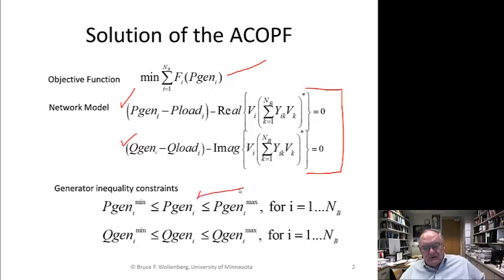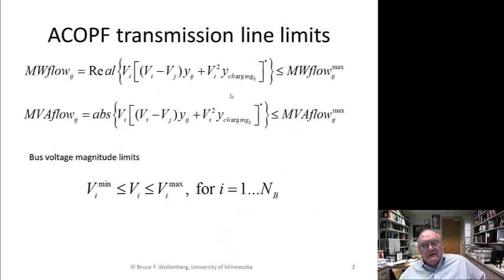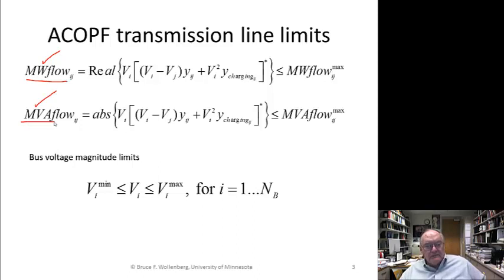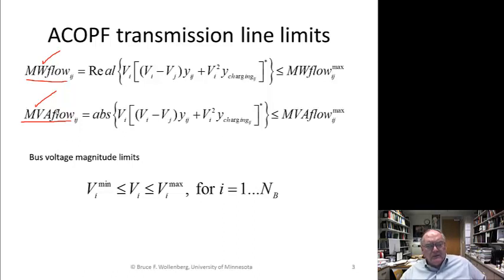We add the generation inequality constraints on P and Q into the problem. Now we're dealing with reactive power, so I can put the Q constraints right into the problem as well. I can put transmission constraints and restrict either megawatt flow or MVA flow. Sometimes it's useful to put MVA flow, or current flow limits if desired. Usually we do either megawatt or MVA flow limits on transmission lines or transformers. Transformers are often rated in MVA.